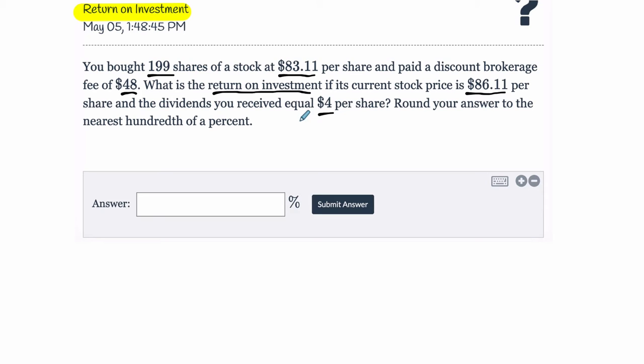So the idea is your stock has gone up, in this case from $83 to $86.11. You've also been paid $4 for each of the 199 shares that you have. So how much of a gain is that as a percent? That's what the return on investment is. As a percent of what you spent, how much did you gain?